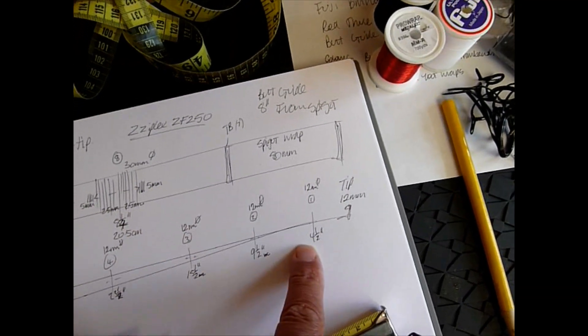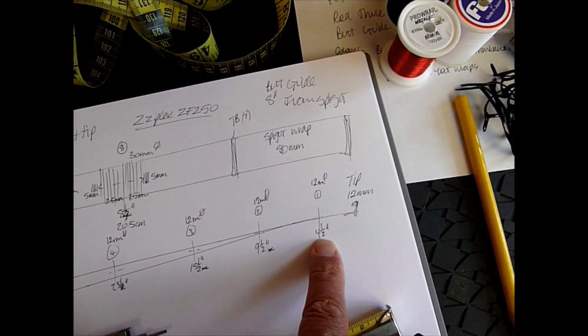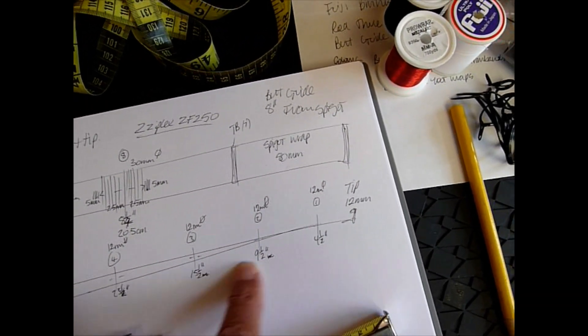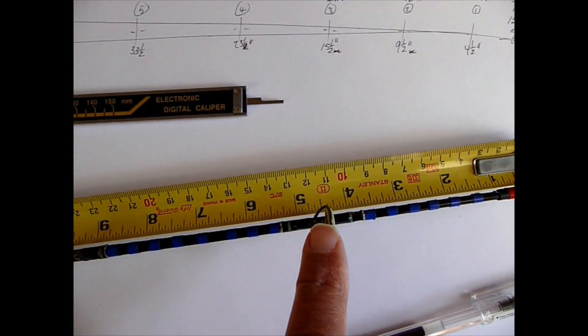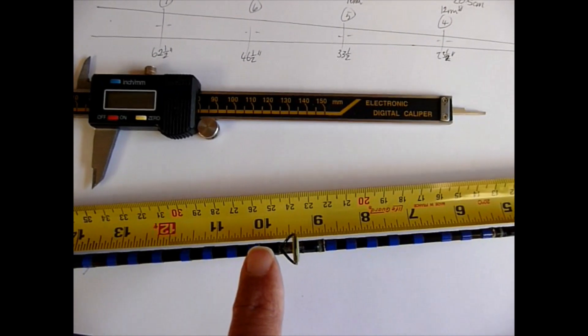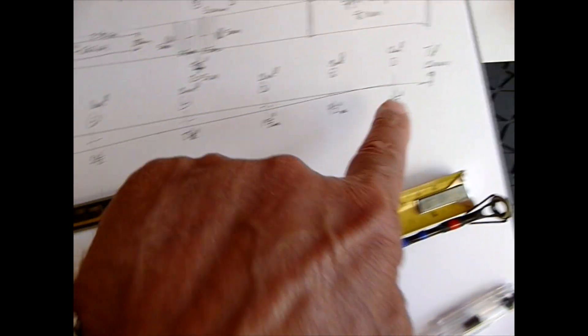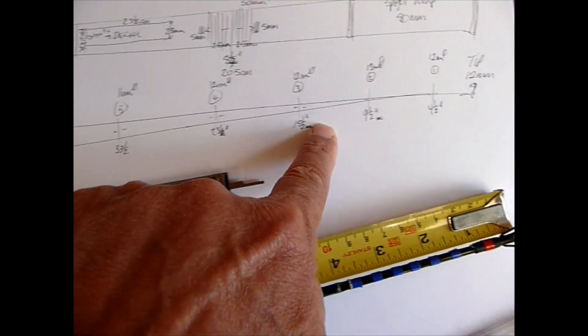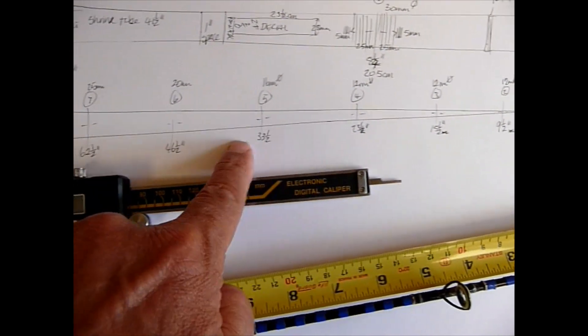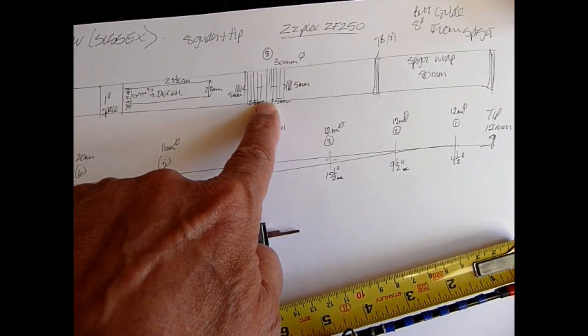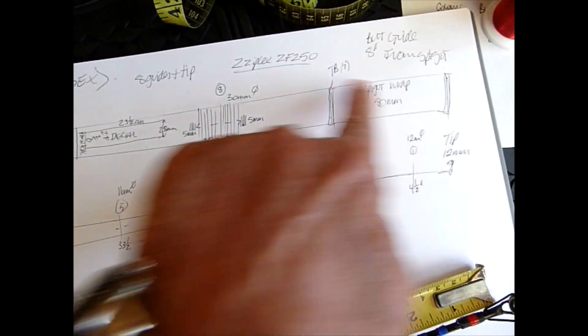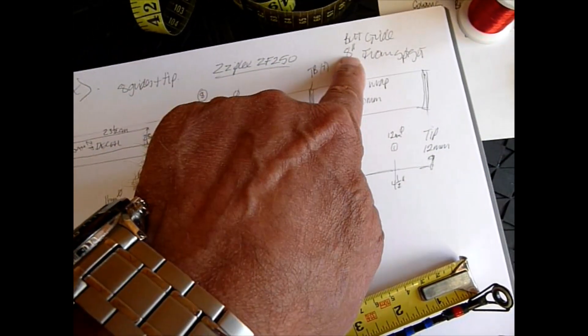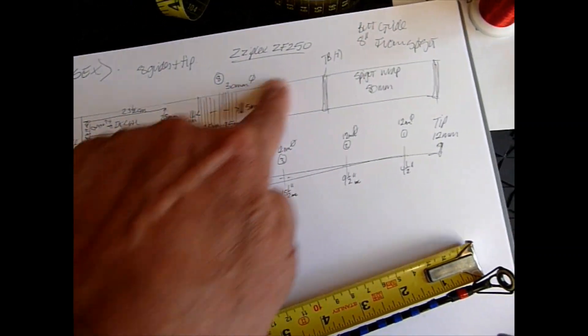The next thing you need to do is to mark the guide spacings. You've got your tape measure, so we know that the first one is four and a half, then nine and a half. You start to plot those all the way down. When you come to your butt guide, make sure you get the distance from the spigot end to the butt. I know that's eight inches.